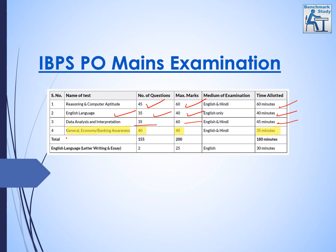Next is general economy and banking awareness, in which you get 40 questions worth 40 marks in 35 minutes. Total is 180 minutes. Plus, here you have the writing portion — letter writing and essay writing. There will be two questions: one letter or one essay, worth 25 marks, which you have to write in 30 minutes. So this is typing-based, basically.